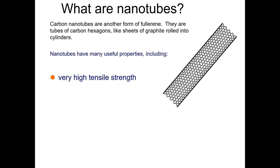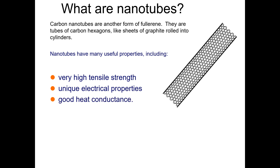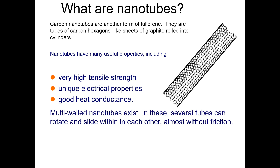Nanotubes have many useful properties. These nanotubes have remarkable properties. Among those properties, they have very high tensile strength and unique electrical properties — they can be semiconducting depending upon the helicity or the diameter. Along with that, they are good heat conductors — they can easily conduct heat from one place to another.